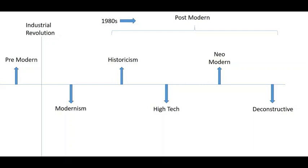As part of Post-Modern architecture, we have seen in Historicism how they took references from multiple periods of history, in a very mocking and playful manner, drawing inspirations from historic styles. Historicism was high on ornamentation, whereas the High-Tech style was simple and with less ornamentation.